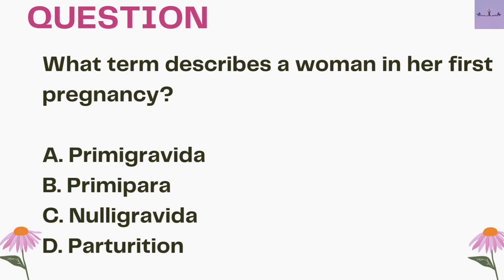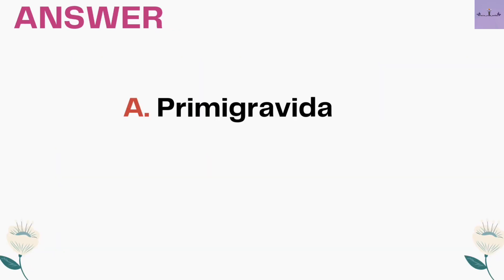Next question: what term describes a woman in her first pregnancy? A. Primigravida. B. Primipara. C. Nulligravida. D. Parturition. The answer is option A, Primigravida.